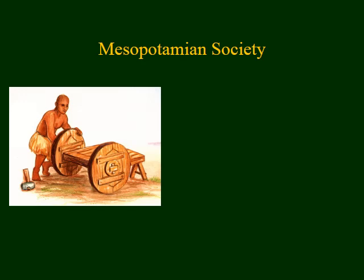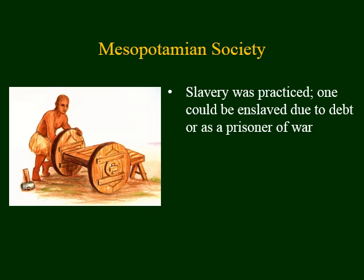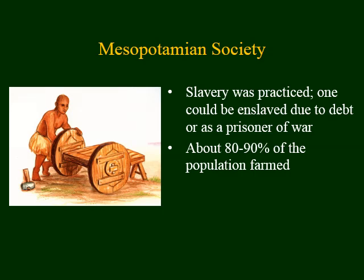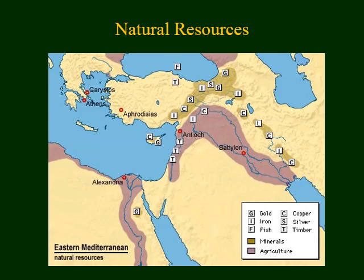The Mesopotamians practiced slavery. It's unclear exactly what percentage of the population was enslaved; however, a person could become a slave if they developed some sort of debt or were a prisoner of war. Probably about 80 to 90 percent of the population was directly involved in farming — they needed that many people to produce enough food. This map shows where agriculture was the number one part of the economy.